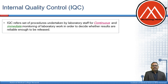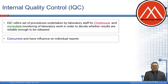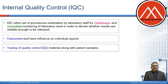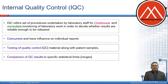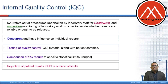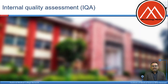Internal quality control refers to the set of procedures undertaken by laboratory staff for continuous and immediate monitoring of lab work in order to decide whether results are reliable enough to be released. It is concurrent and has influence on individual reports, involving testing of quality control material alongside patient specimens. It comprises comparison of quality control results to specific acceptable limits or ranges, as well as rejection of patient results if quality control is outside the limit.